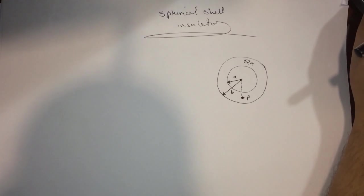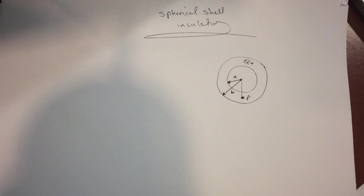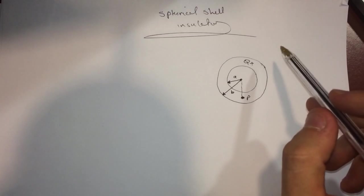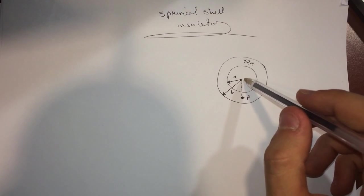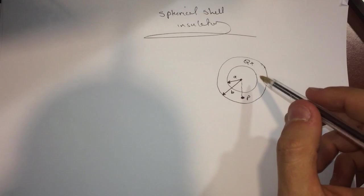Hi guys, this is a very cool spherical shell insulator problem from Smart Physics. Let's do this real quick. In this question, we have an insulator that has a charge and there's nothing inside it, and they're asking about the electric field at point P.